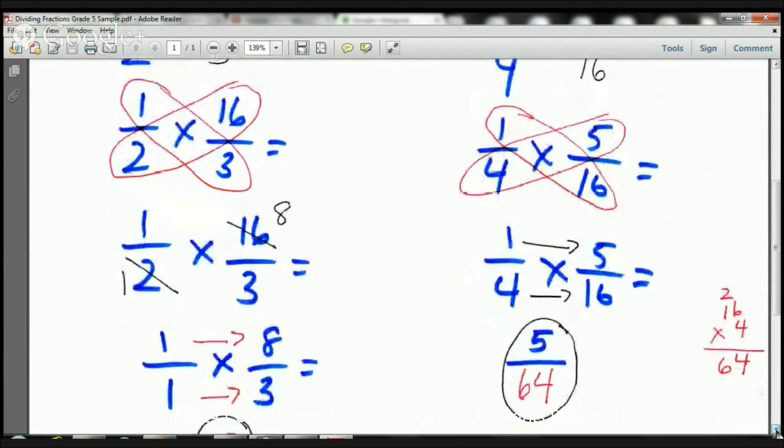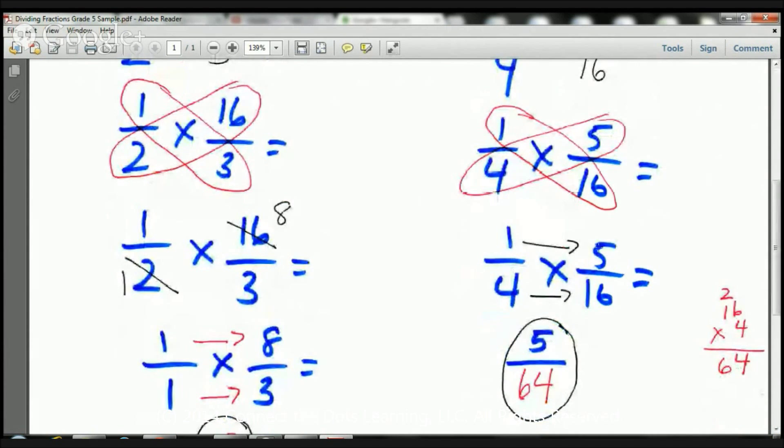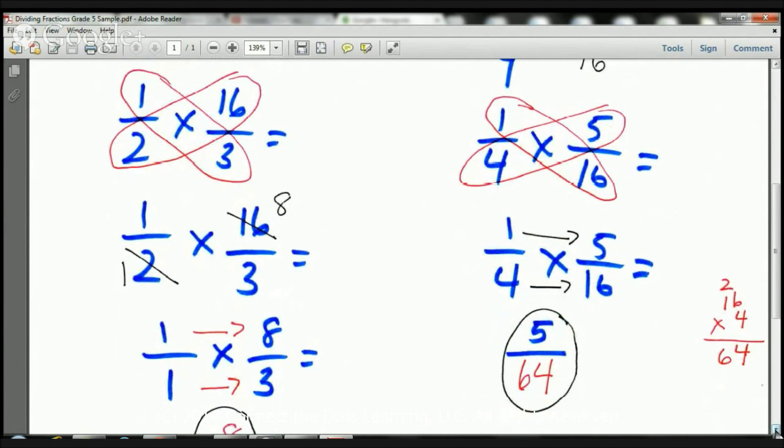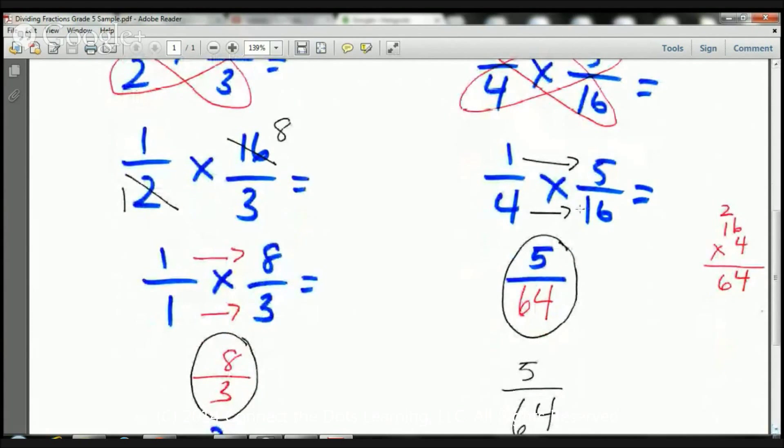So, now what I do is I multiply straight across. One times five is five. I put the five there. And now, four times six... And this is really important, boys and girls. I'm going to go ahead and I'm going to move this to the side because I don't want to make a silly mistake. Yeah, can I multiply sixteen times four? Probably...